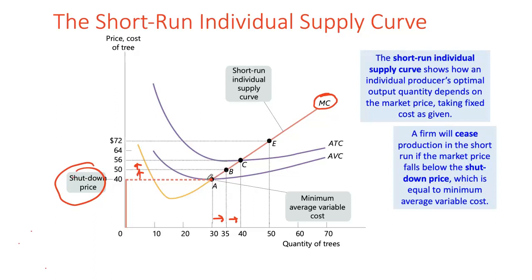The marginal cost curve above its minimum AVC is the short-run individual supply curve of the firm. Any price level above minimum AVC: follow the optimal quantity rule where price equals MC. If price is lower than minimum AVC, the firm shuts down — optimal quantity is zero, as it's not covering variable costs and ceases to produce any output.